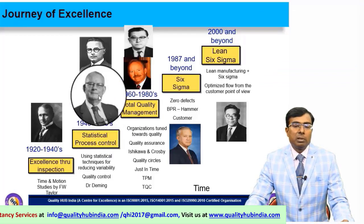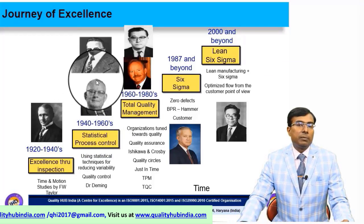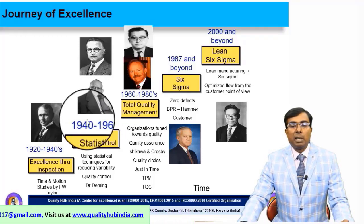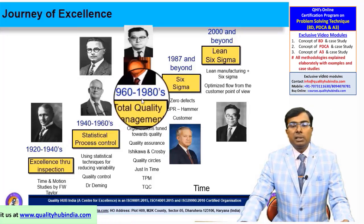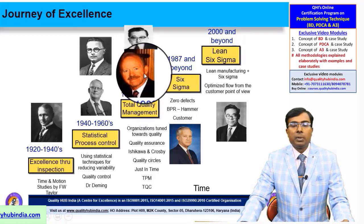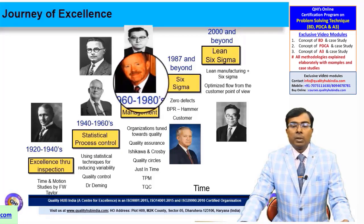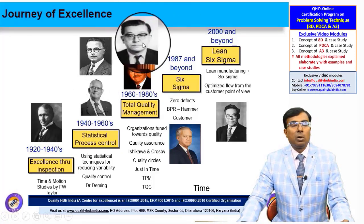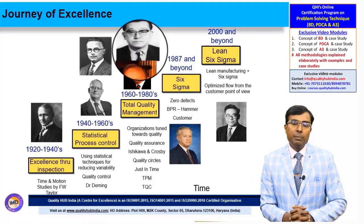Because of Deming's immense contribution in the field of quality, he has been considered a leader of industry. Moving on to the 1960s–1980s phase, Philip Crosby was a prominent figure who gave the concept of cost of quality. Kaoru Ishikawa gave the concept of the Ishikawa diagram, also known as the cause-and-effect or fishbone diagram, which is very popularly used for resolving issues.